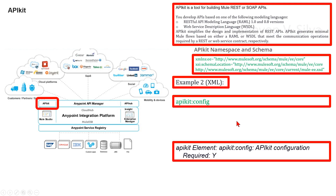As an XML example, consider the APIkit elements. The apikit:config - the APIkit configuration - is a required element. You can see the APIkit namespace and schema, as well as the namespace and schema locations.